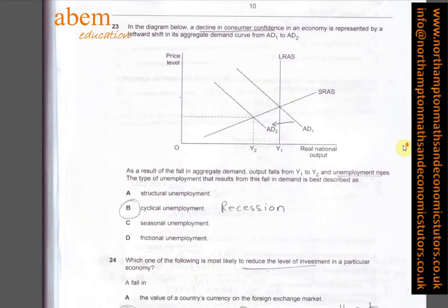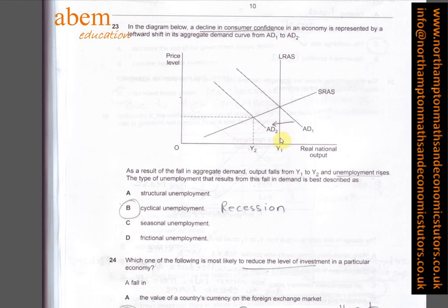In question twenty-three, the AD curve has decreased, moving inward from AD1 to AD2. We can see the SRAS and LRAS, so there is spare capacity in the economy. This could be due to cyclical unemployment or recession, similar to moving inside the PPF.